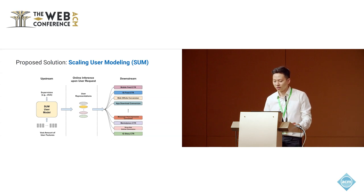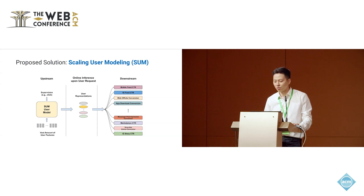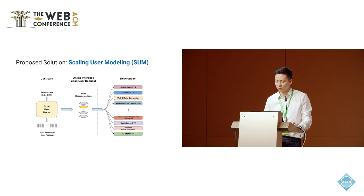To answer this question, we introduce Scaling User Modeling, or SUM for short — an online framework that revolutionizes user modeling within Meta. SUM is designed to capitalize on advanced user modeling techniques while adhering to practical constraints and promoting efficient, scalable representation sharing across models. SUM employs an upstream-to-downstream paradigm: we train a small number of large-scale upstream user models with sophisticated architectures under diverse supervision such as clicks and conversions. These user models process a vast amount of user-side signals and features, generating compact user embeddings.